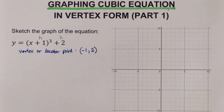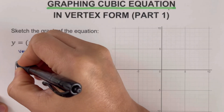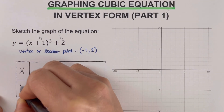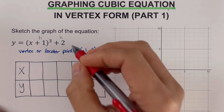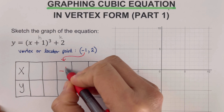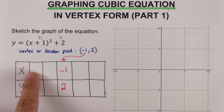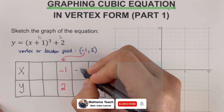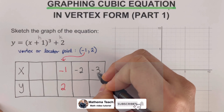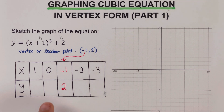The second step is to create and complete the table of values. We place the vertex or locator point in the middle of the table, so that would be negative 1 and 2. We complete the x values going down to negative 2, then negative 3, and up to 0, then positive 1. Our next task is to show the work so we can determine the y values for the blank spaces.